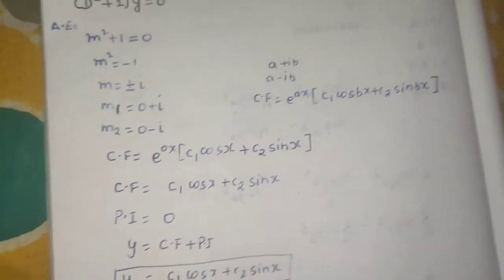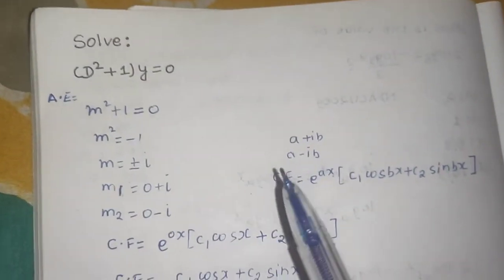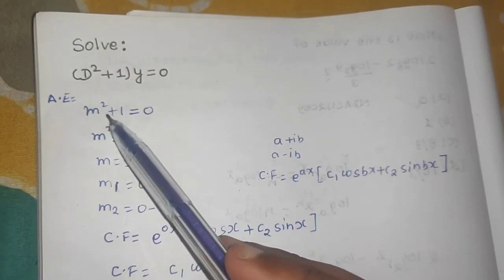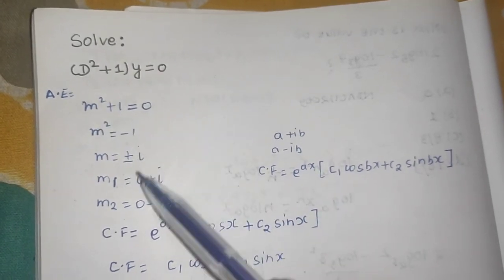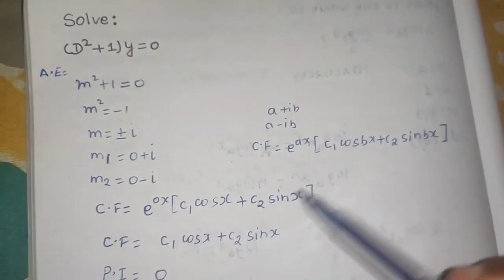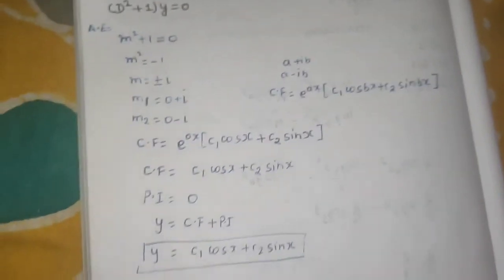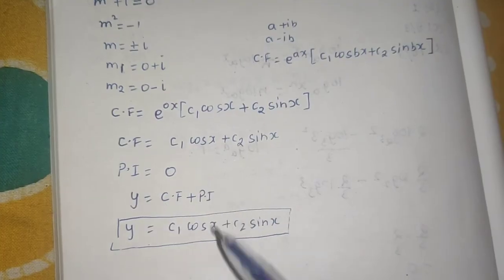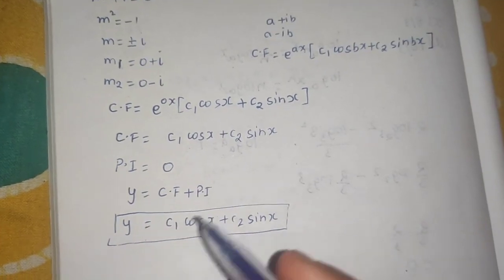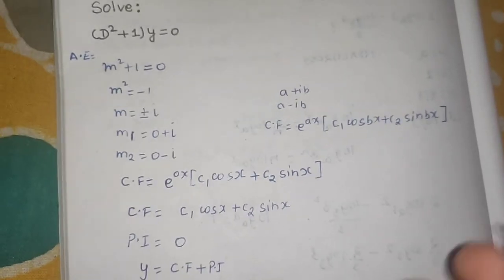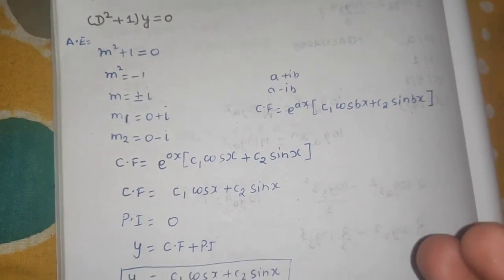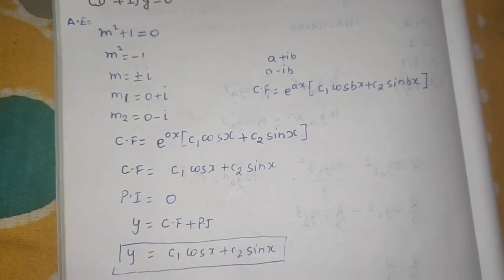I hope you understood. Very simple: first convert it into D form to m form, equate it to 0, find the roots, then apply whatever method suits and then find the final solution. In case particular integral is 0, final solution is equal to the complementary function itself. If you have any problem you can visit the video on this particular topic. Link is in description as well as comment box.